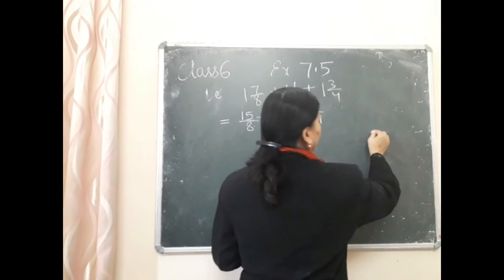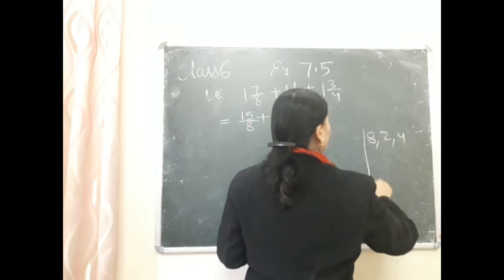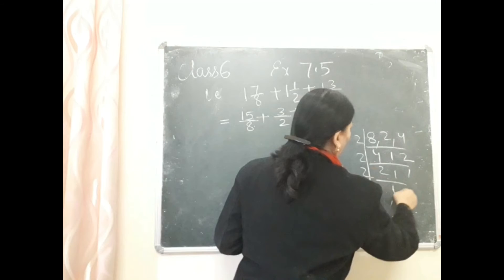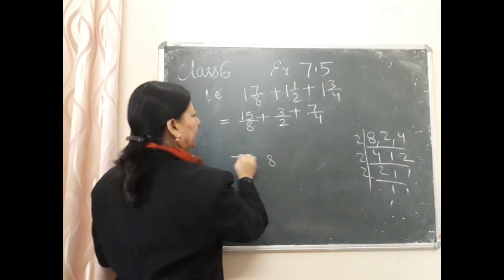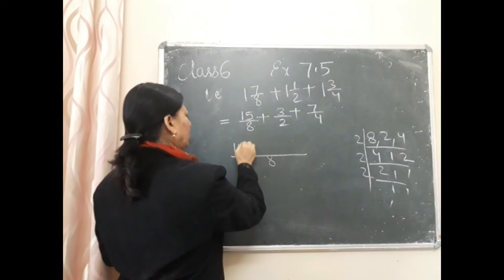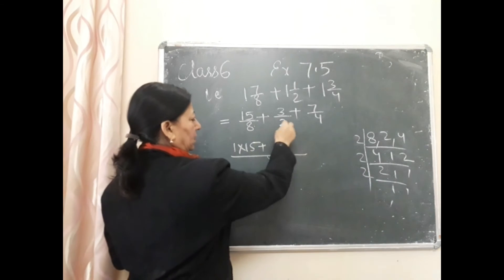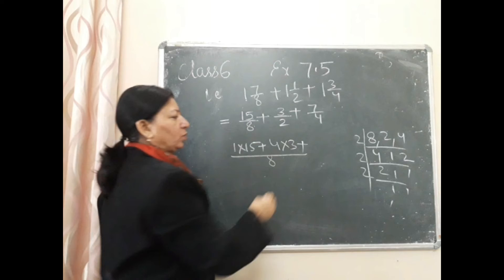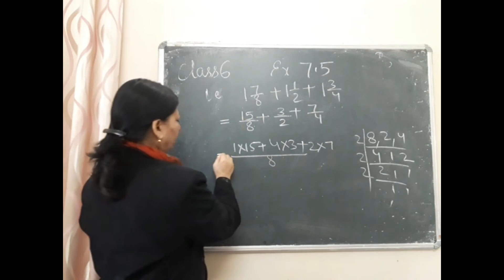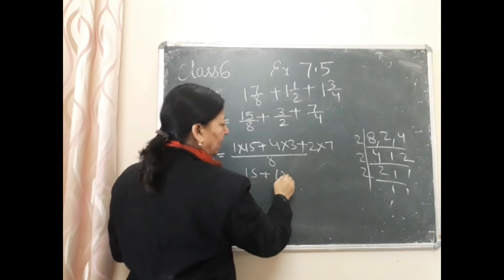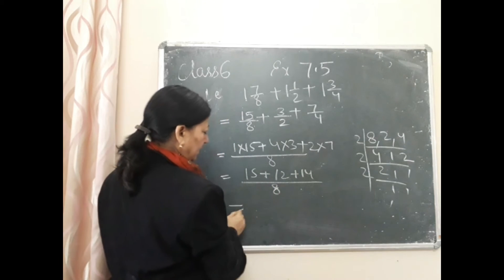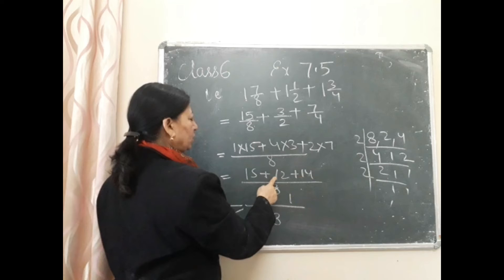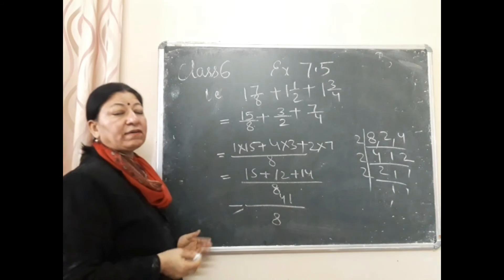फिर denominator 8, 2, 4 का LCM लेंगे — LCM = 8. 8 की टेबल में 8, 1 बार → 1×15 = 15; 2 की टेबल में 8, 4 बार → 4×3 = 12; 4 की टेबल में 8, 2 बार → 2×7 = 14. तो numerator: 15 + 12 + 14 = 41, upon 8. Answer: 41/8.